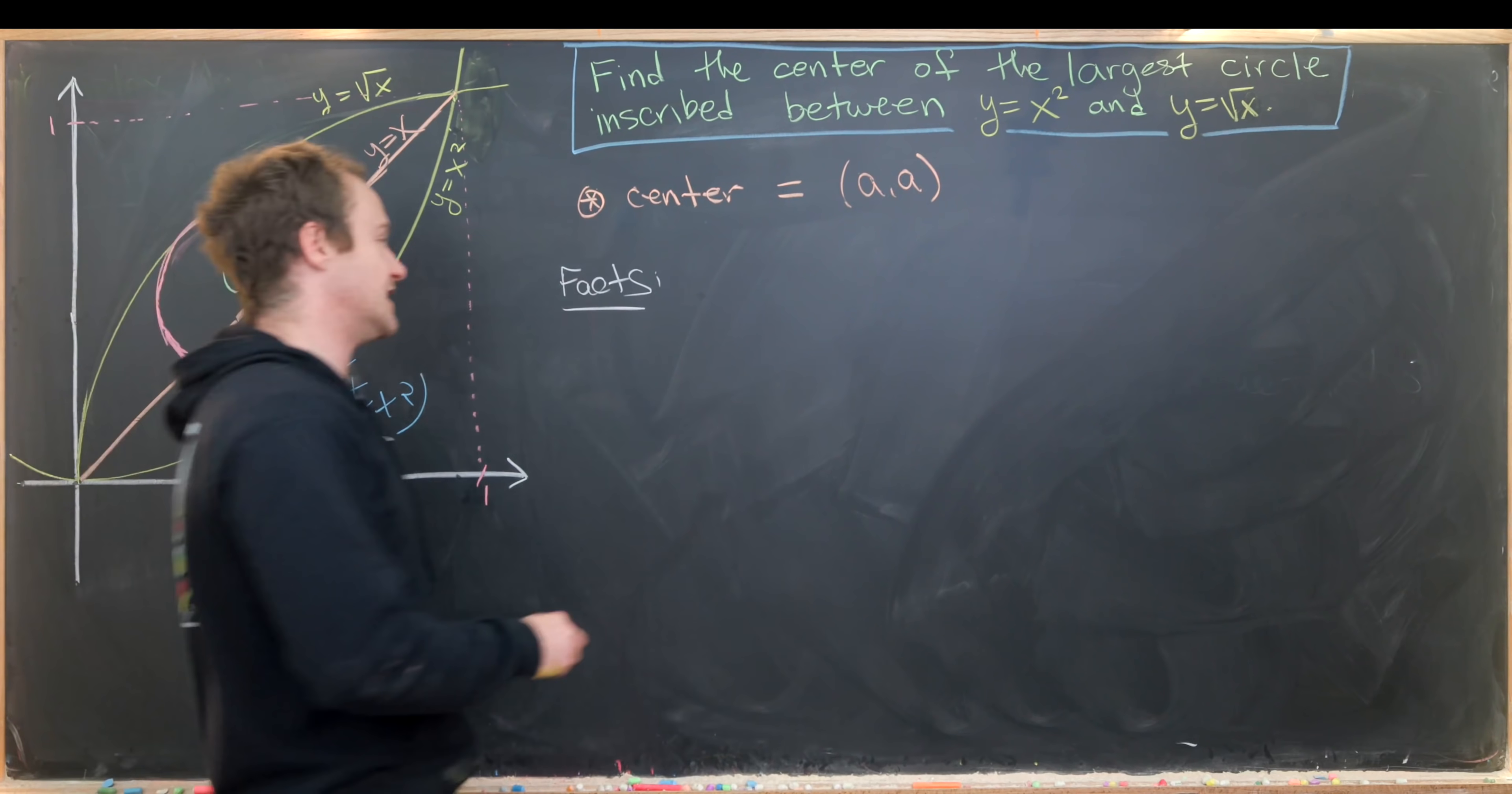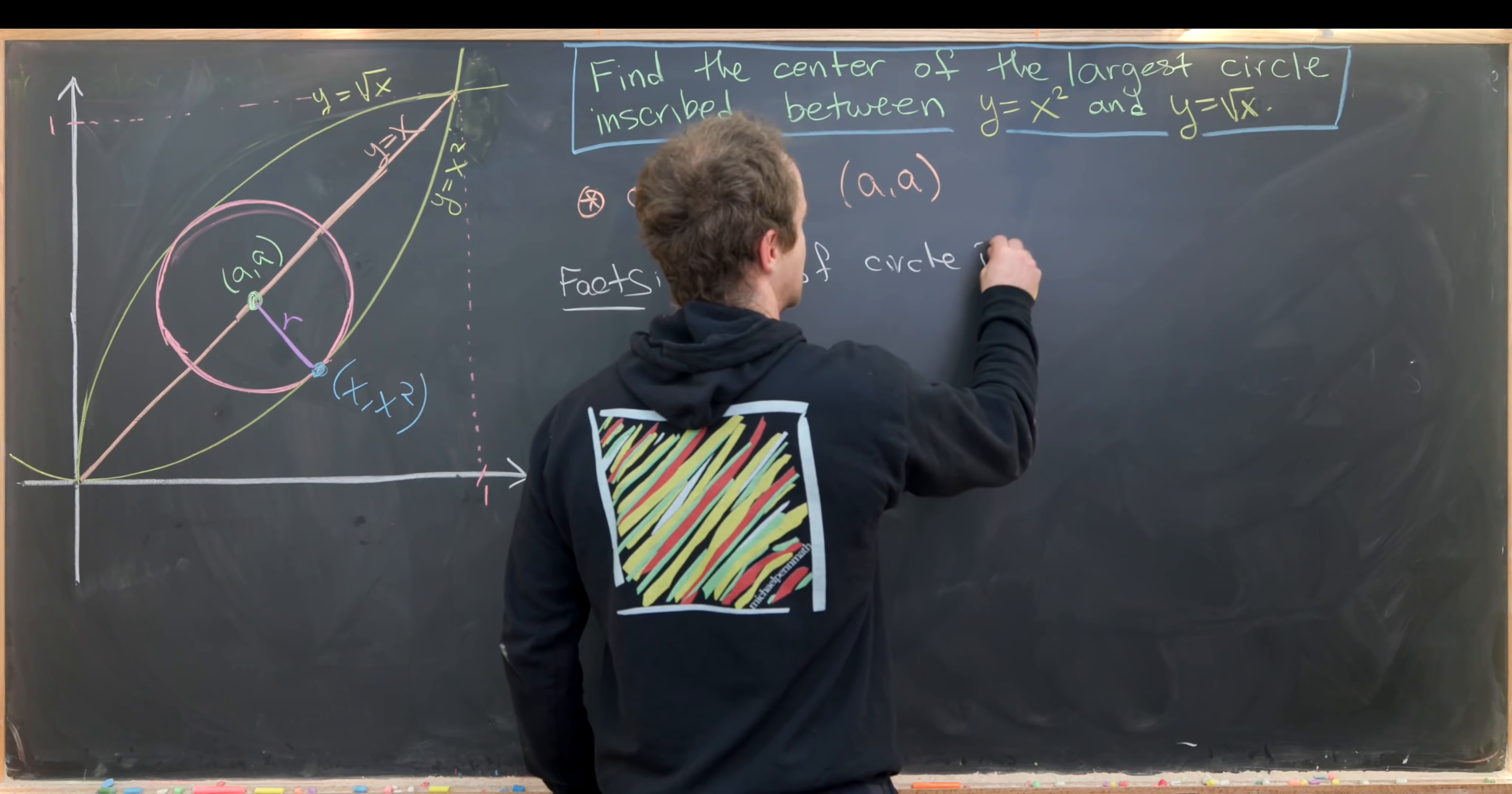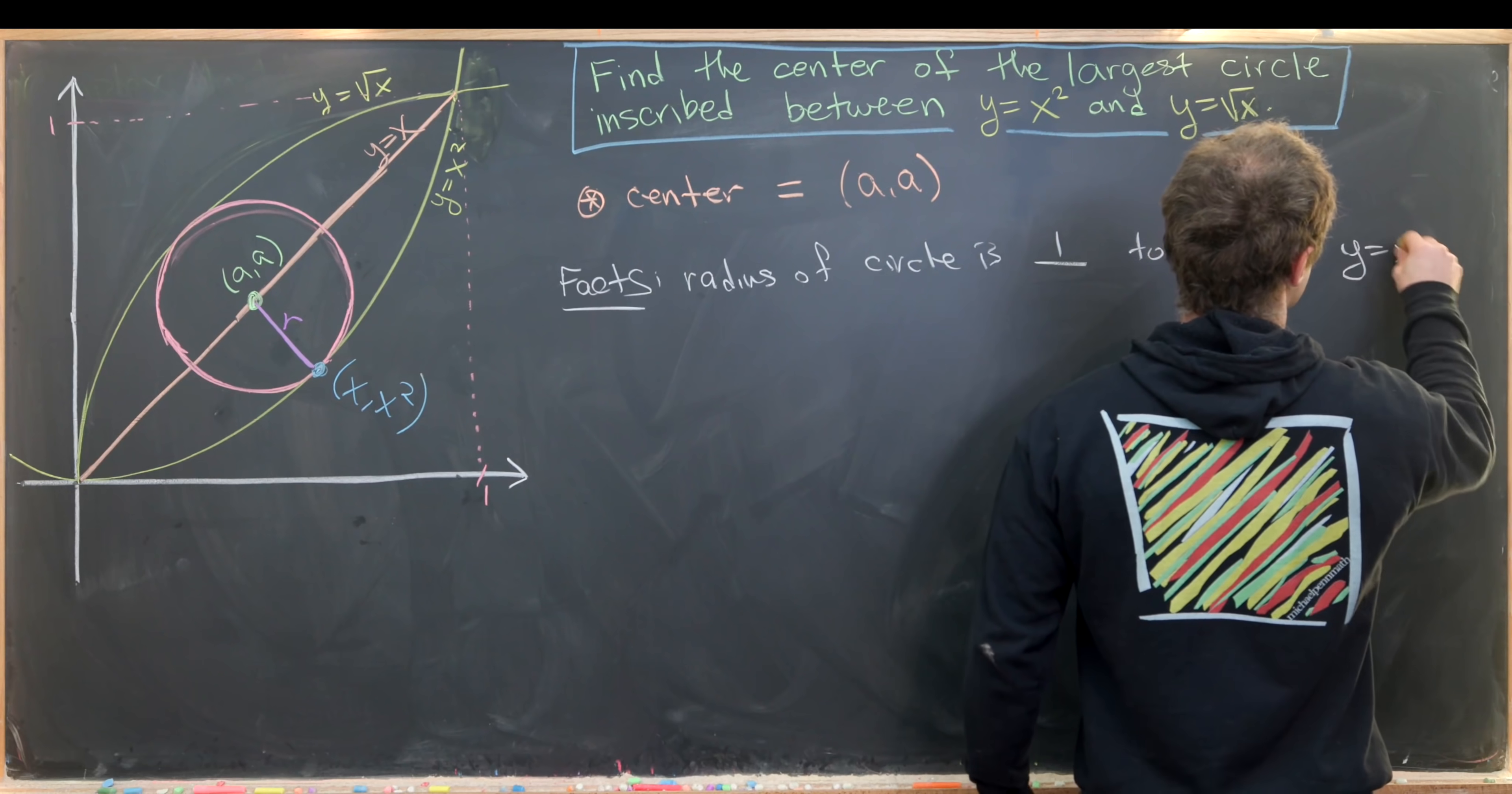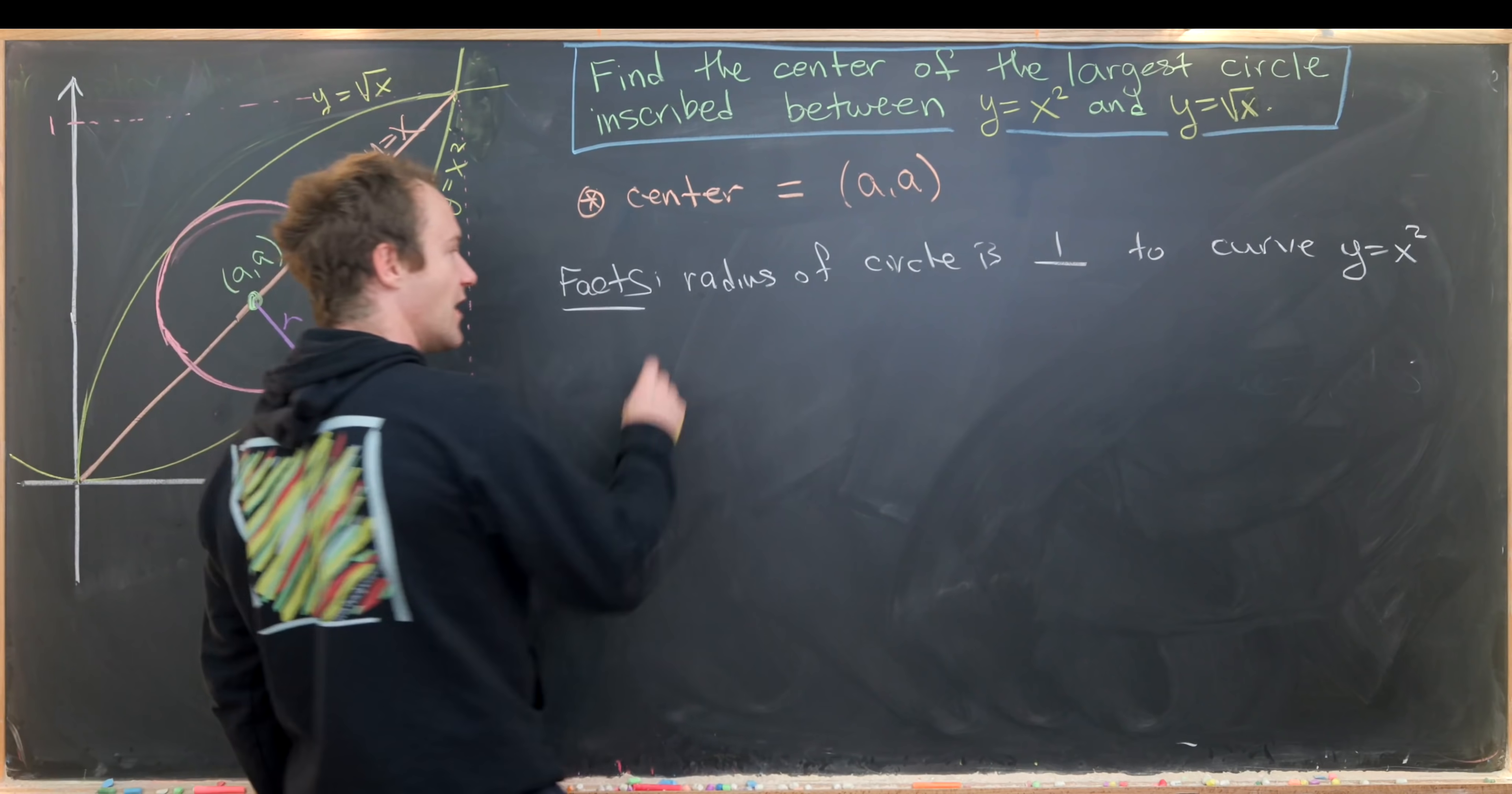Let's summarize those two facts. First, the radius of the circle is perpendicular to our curve y equals x squared at this unknown point x comma x squared.